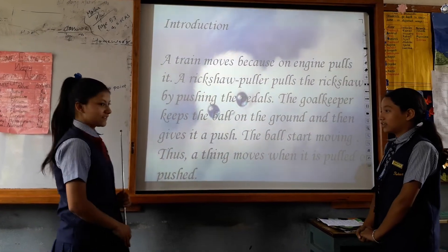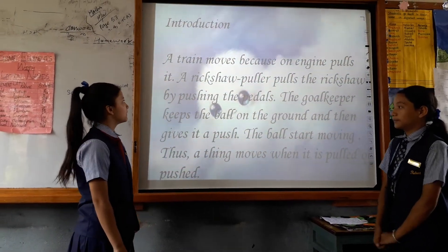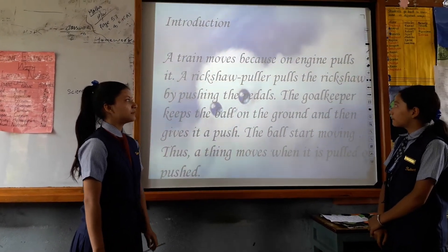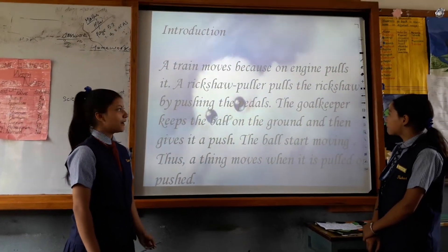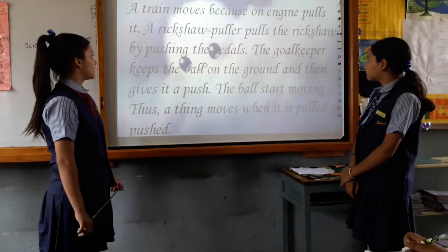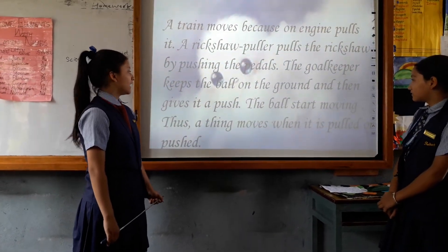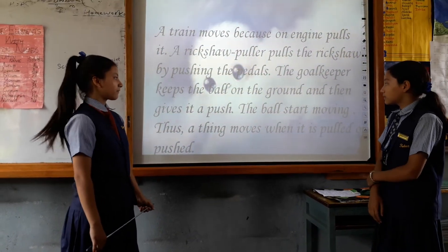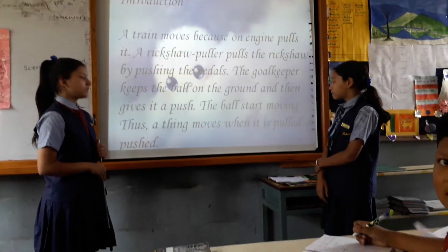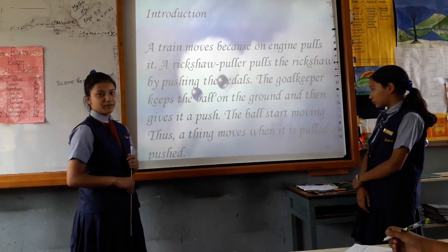The introduction. A train has an engine, a rickshaw has a rickshaw puller. By pushing the pedals the board keeper keeps the ball on the ground and then gives it a push. The ball starts moving because an object moves when it is pulled or pushed.